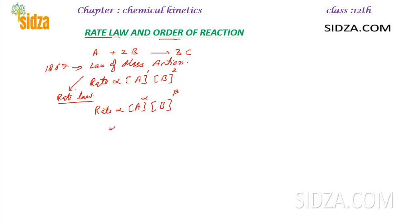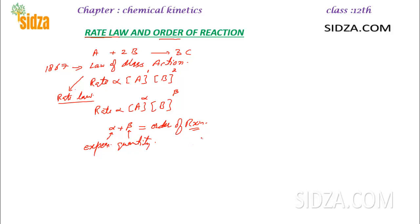Alpha plus beta is called the order of a reaction. Alpha and beta are quantities you can determine only through experiments — this is a pure experimental quantity. We can't determine it theoretically just by looking at the balanced chemical equation. That is the main difference between the rate law and the law of mass action.